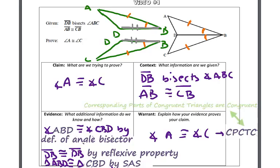CPCTC stands for corresponding parts of congruent triangles are congruent. Since we were able to prove triangle ABD was congruent to triangle CBD, we know that all of their corresponding parts are congruent, including angle A and angle C.